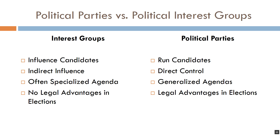Interest groups don't have to have a generalized agenda — some choose to, but they're not required to because they don't need to win elections. That means they can afford to specialize by focusing on particular issues without worrying about an electoral backlash. When a party with a specialized agenda does form — say the Green Party, which focuses essentially all its time on the environment — it fails miserably, not winning elections because it takes no positions on a whole host of issues Americans care about.